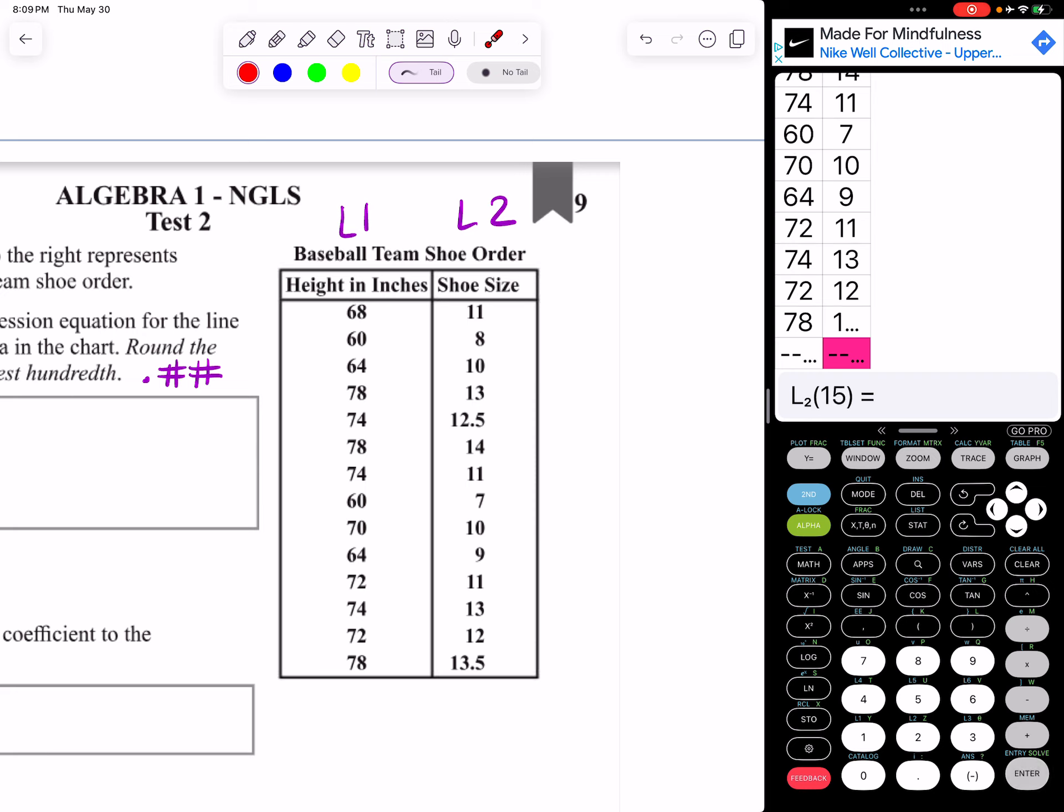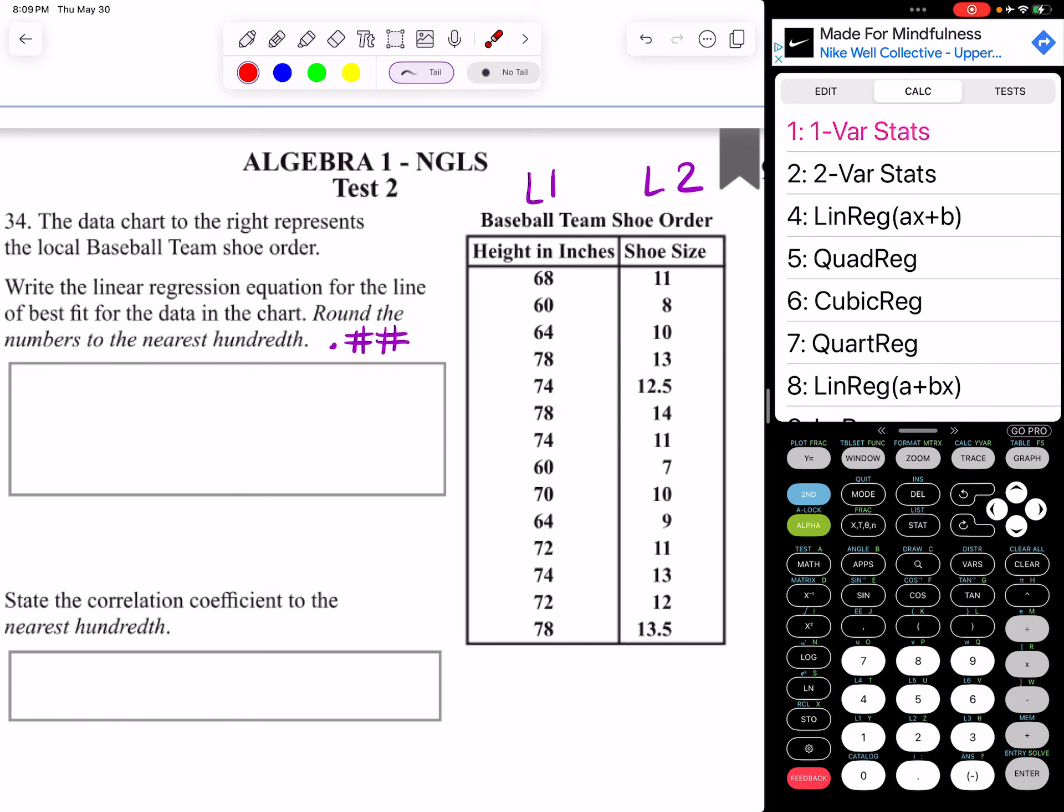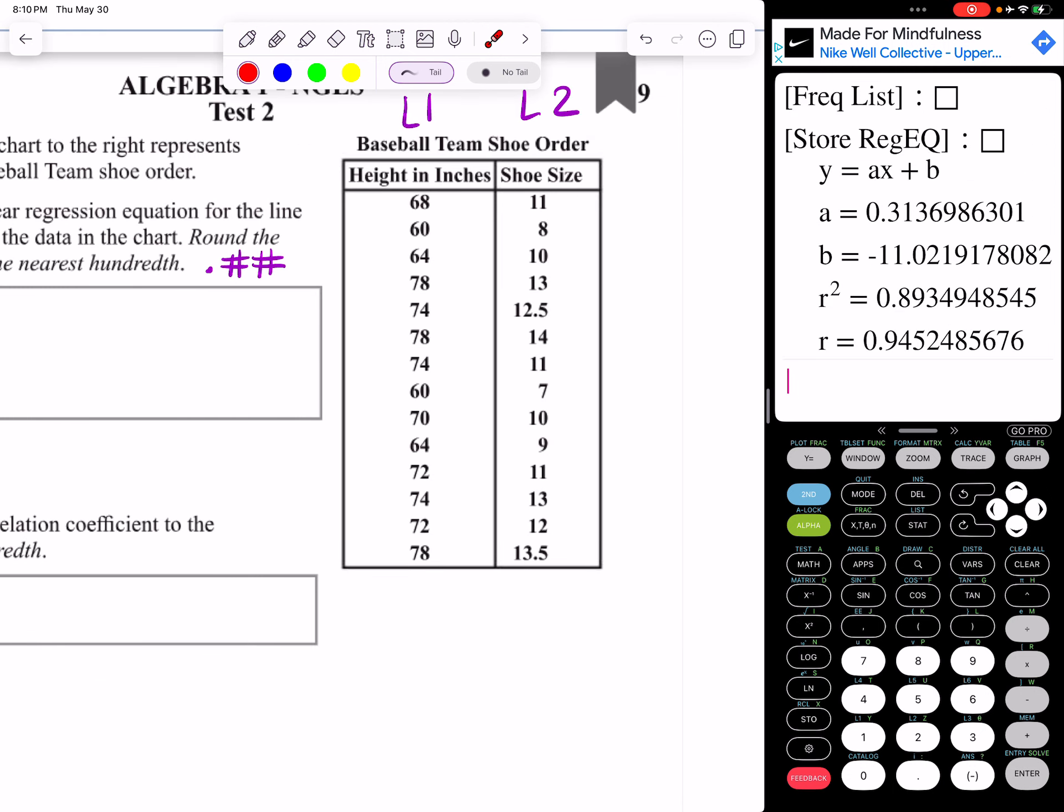And if I look, I finished. I typed everything. Now to do a linear regression, we go to stat, scroll right, and go down to 4, where it says linreg ax plus b. We hit enter. And now what I'm going to do is I'm going to screenshot that and put it here. That way we could just analyze it.